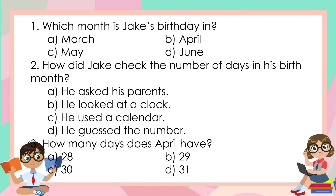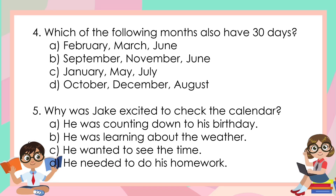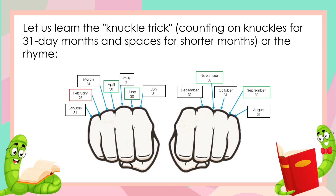Now, students, could you please answer the following questions? Now, let us learn the knuckle trick — counting on knuckles for 31-day months and spaces for shorter months — or the rhyme.